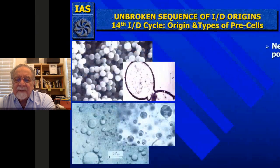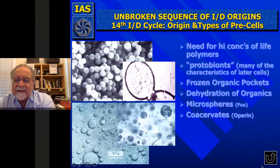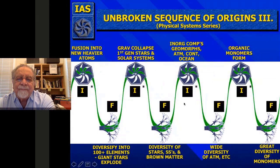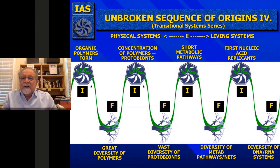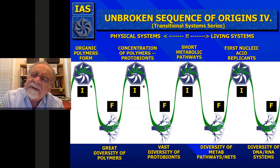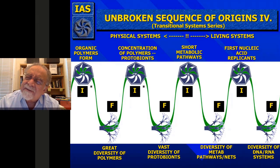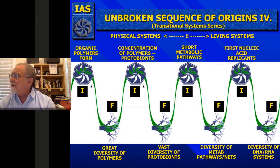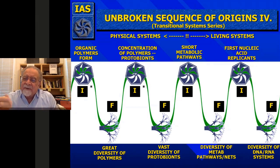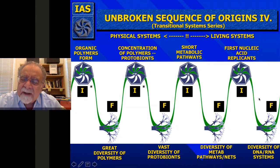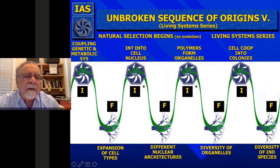So organic molecules could form, then lots of organic molecules, then polymers and a great diversity of polymers, then concentration of these in protobionts. Wide diversity of atmospheres, wide diversity of monomers, wide diversity of protobionts—and then you start getting short metabolic pathways and the first nucleic acid replicants. DNA right now is the first thing in what is called the grand sequence of information transfer: DNA to RNA to protein. But nowadays they think that RNA and simple RNA biochemical reactions with proteins started first.